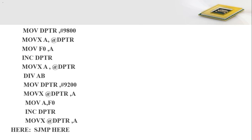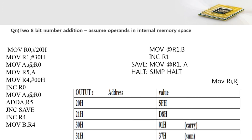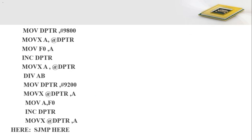Now we consider another program example where the difference is that the two operands are available in external memory locations. In the previous case, operands were in internal memory bytes and the result was placed back into an internal memory byte. Here we need to take operands from external memory bytes and write the result back into external memory. For this we need to use the data pointer DPTR. First move the external memory byte address into DPTR, then load the content from that location into the accumulator using the MOVX instruction.